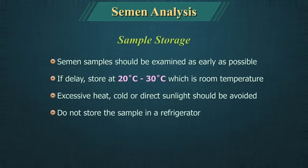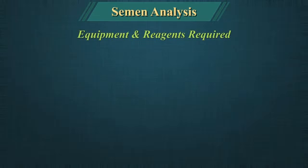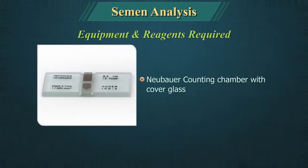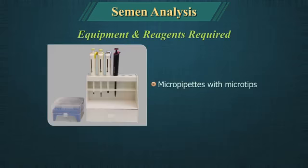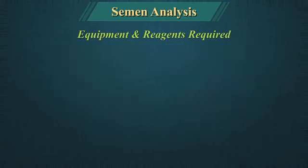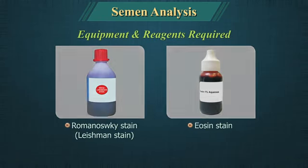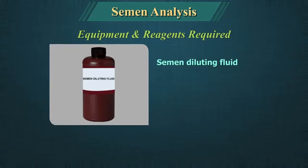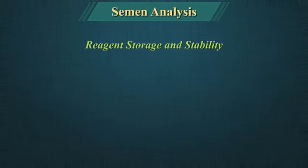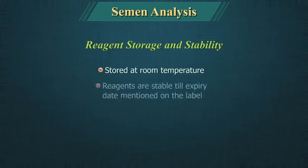Equipment and reagents required for semen analysis: glass slides, cover glass, Neubar's counting chamber with cover glass, micropipettes with microtips, Pasteur pipette, pH paper, Leishman stain, eosin stain, semen diluting fluid (containing sodium bicarbonate, formalin, neutral and distilled water), and a microscope. Reagents are stored at room temperature and are stable till the expiry date on the label.